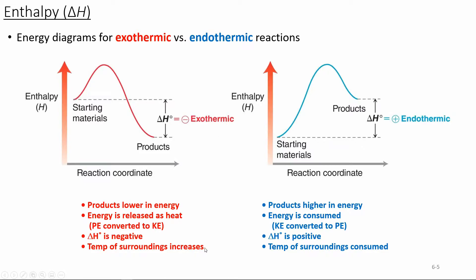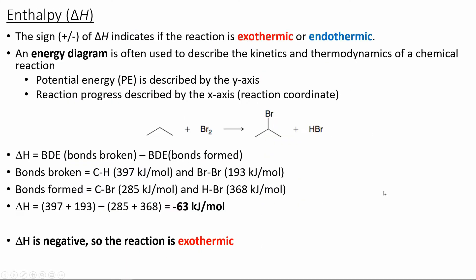In an endothermic reaction, we're going to have a positive enthalpy, and so the temperature of the surroundings is consumed. The sign of the enthalpy is important — it helps us determine if a reaction is exothermic or endothermic. We can often use an energy diagram to display this.